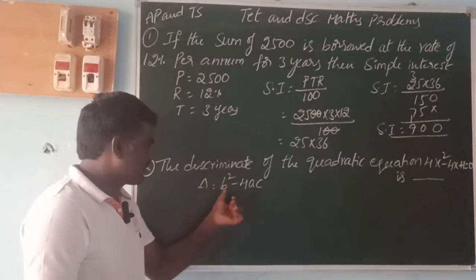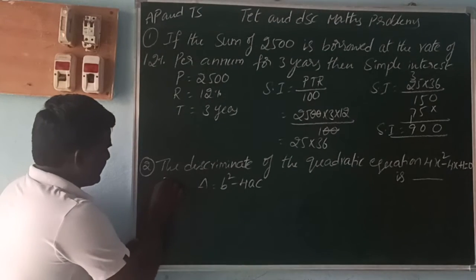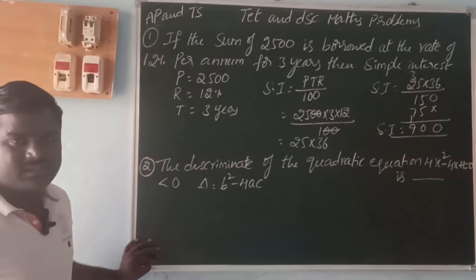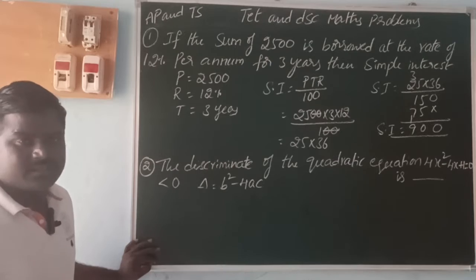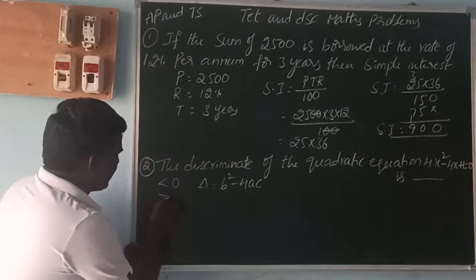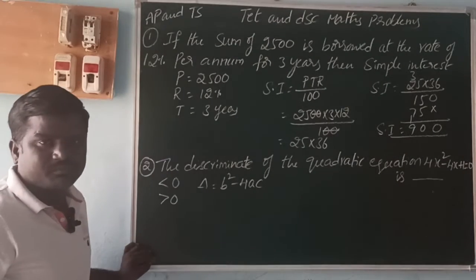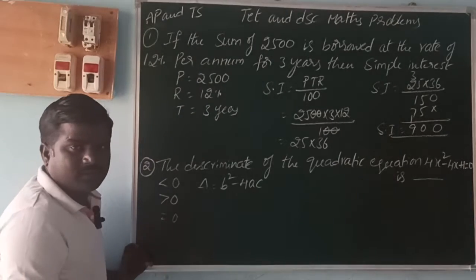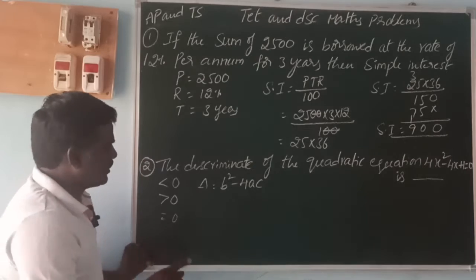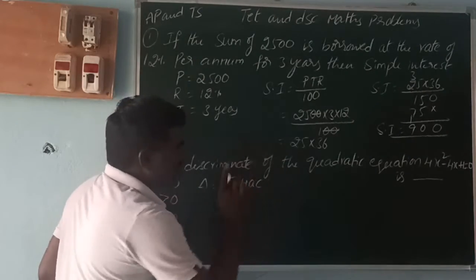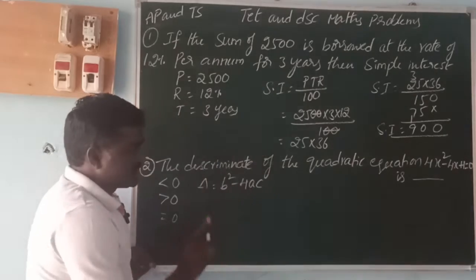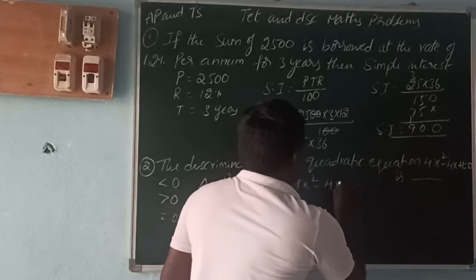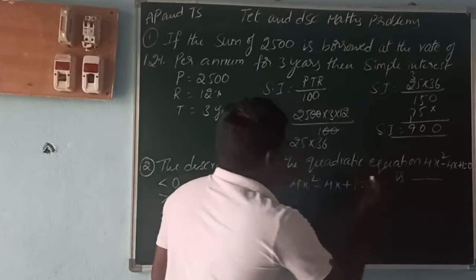Delta equals b squared minus 4AC. If delta is less than 0, the roots are imaginary. If delta is greater than 0, the roots are real. If delta is equal to 0, the roots are equal. Now for the quadratic equation 4x squared minus 4x plus 1 equals 0, we need to find the discriminant.